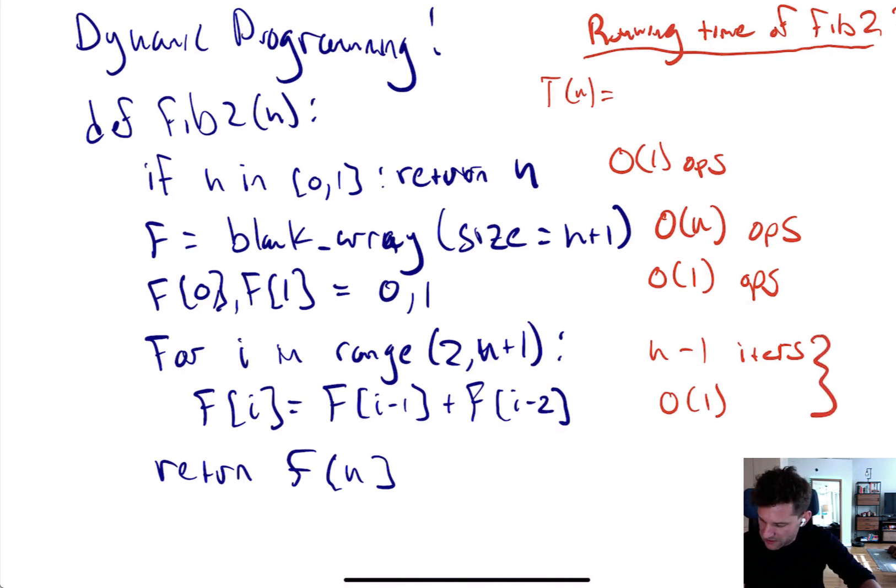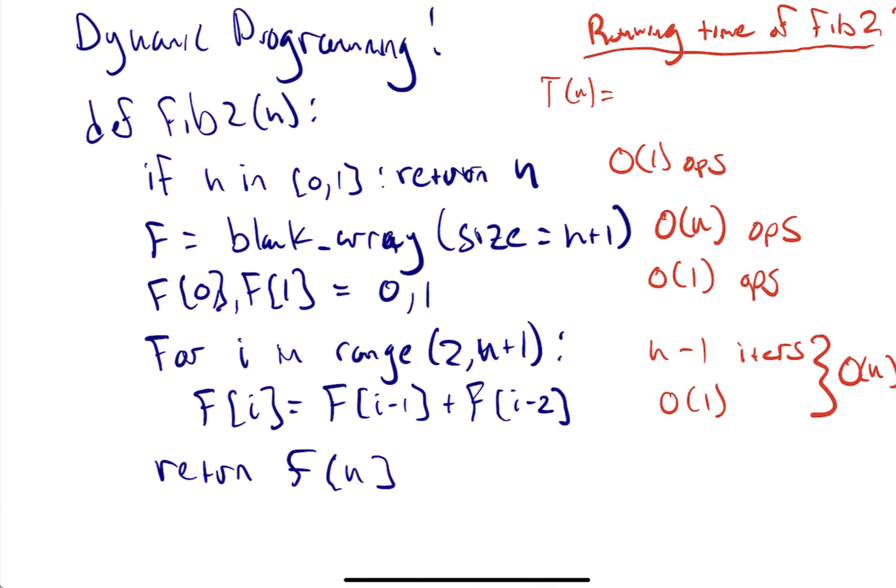Therefore, in total, this takes O(n) time. O(n-1) is also O(n). And this, of course, is an O(1) operation. So in total, we have an O(1) + O(n) + O(1) + O(n) + O(1). That's still on the order of n. This is just O(n). The running time of this algorithm is linear in n.